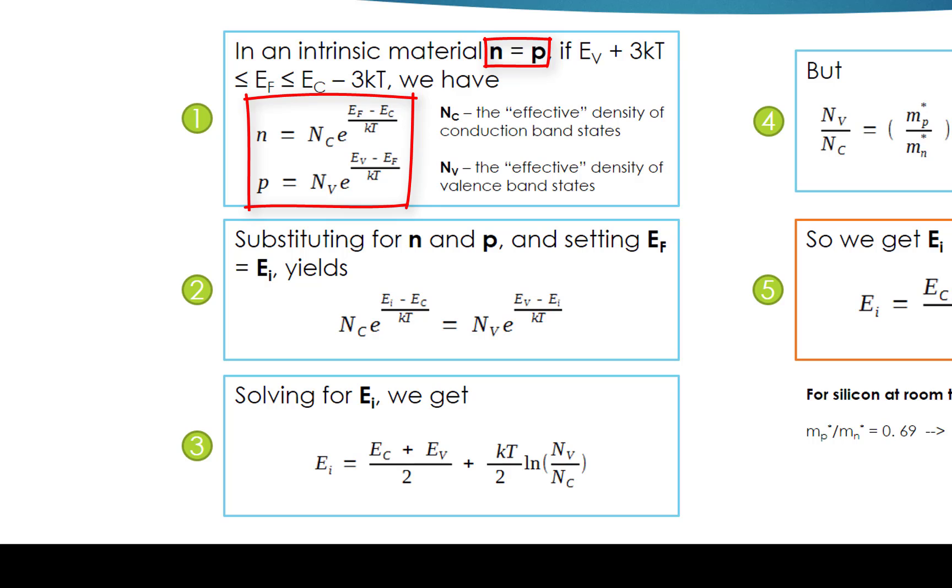Another fact is that EF equals EI in the intrinsic semiconductor. So by substituting for N and P and setting EF equals EI, we then get the second equation. Nc times e to the power of (EI minus EC) over KT equals Nv times e to the power of (EV minus EI) over KT.